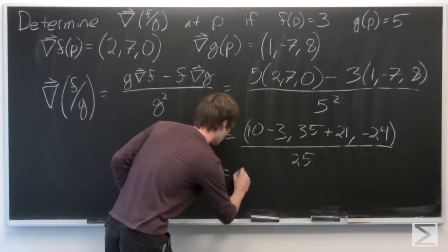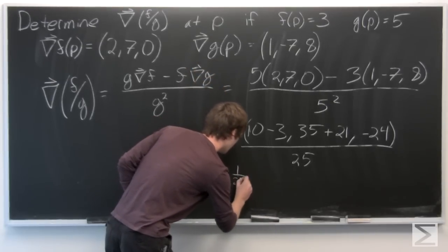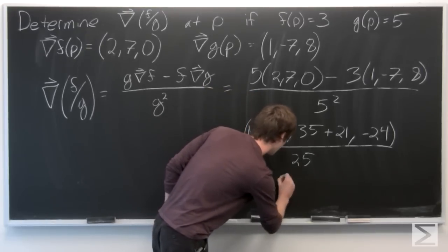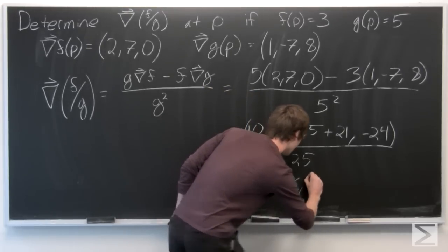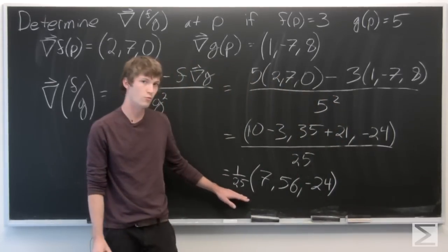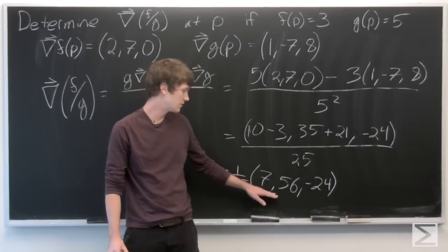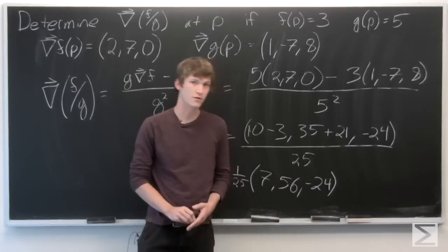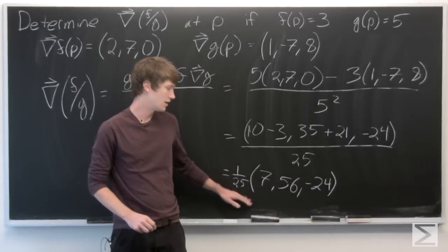So we can write that as the vector 1/25 times the vector (7, 56, -24). And that's the solution.